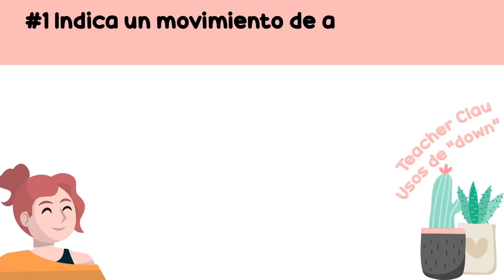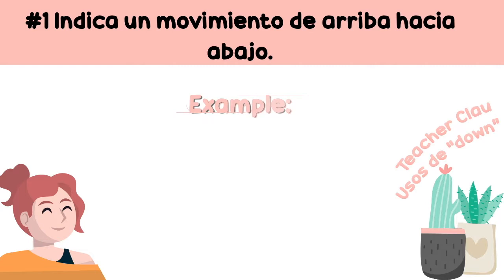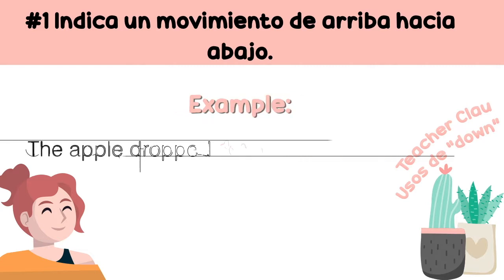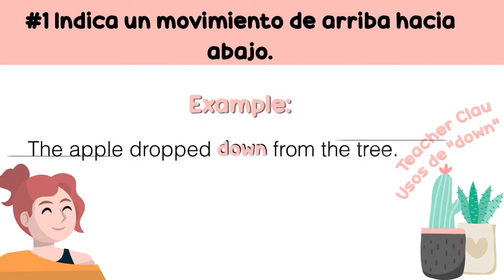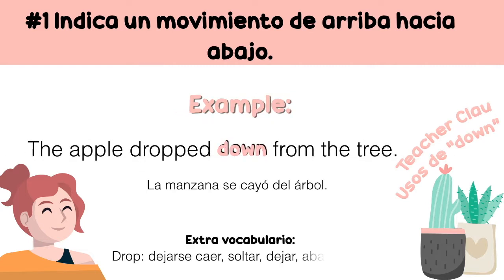Usos de down. Number 1: Indica un movimiento de arriba hacia abajo. Example: The apple dropped down from the tree.